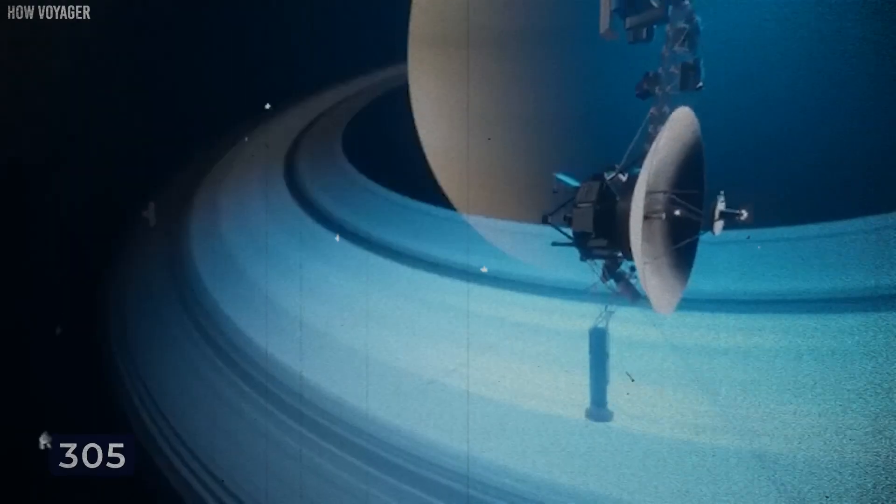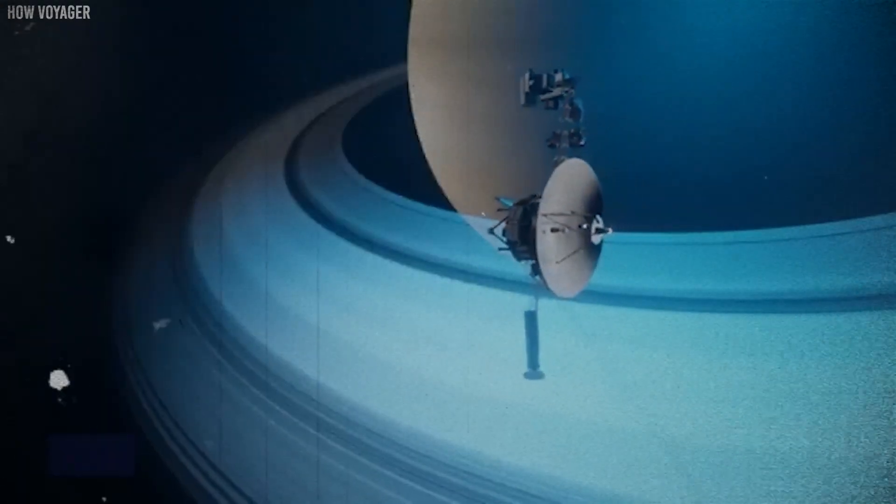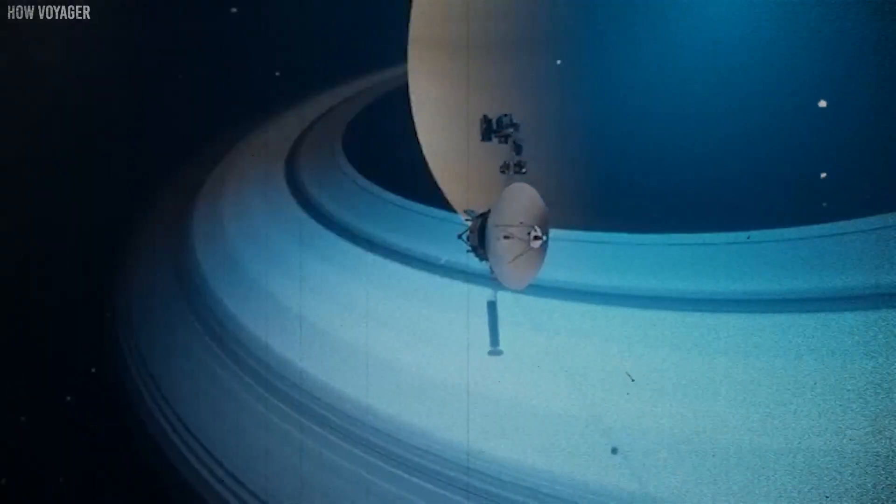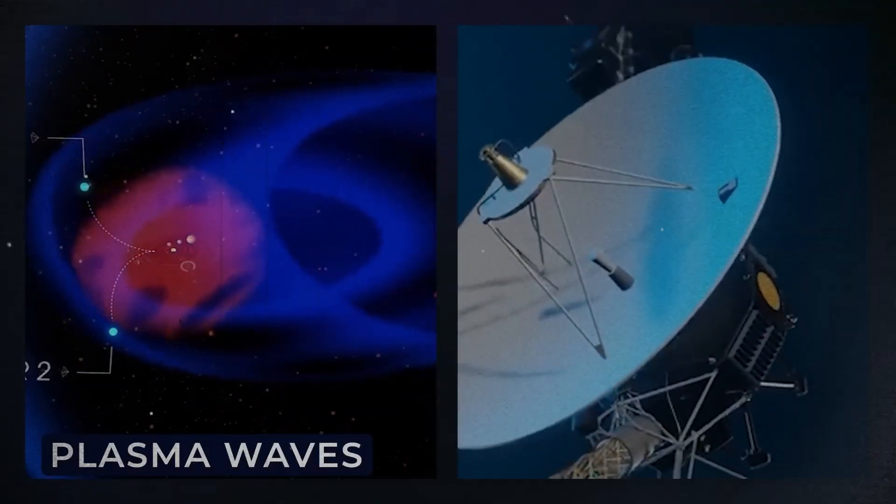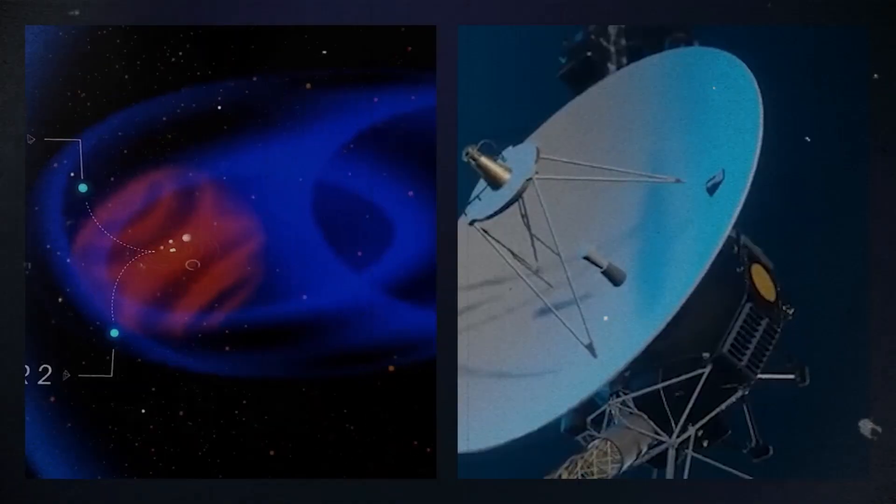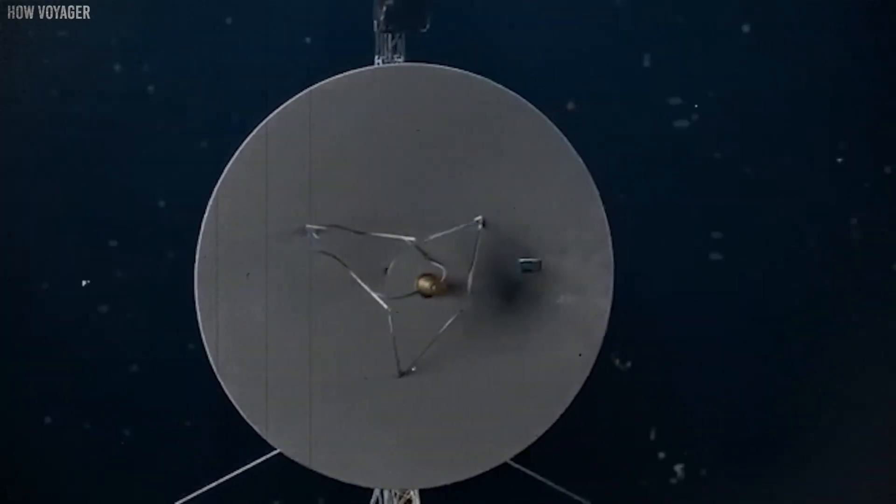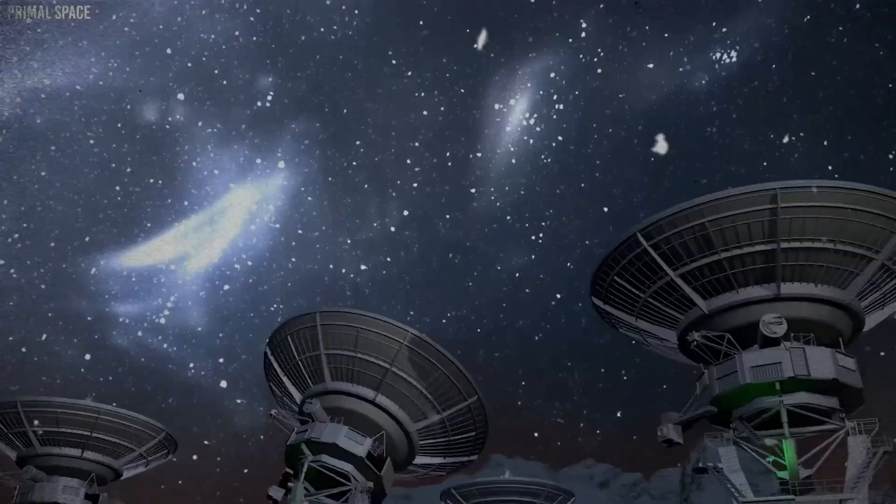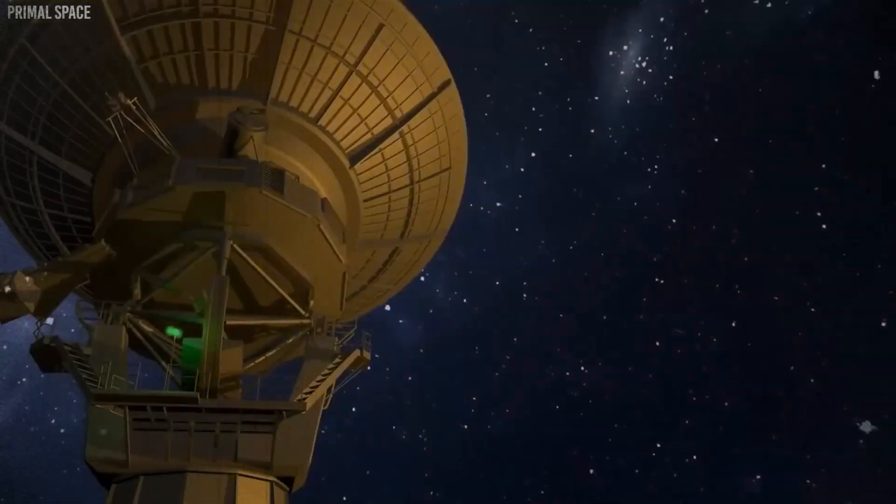Voyager 1 carries 10 scientific instruments. Only those measuring magnetic fields and charged particles are still in use. With just these, it continues to study the interstellar environment beyond the heliosphere. However, power output from the nuclear battery continues to decline.